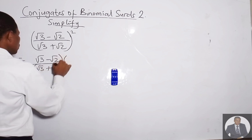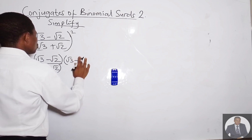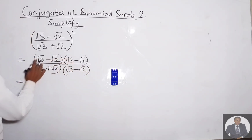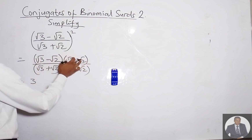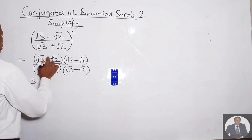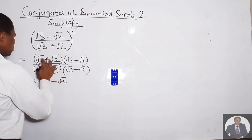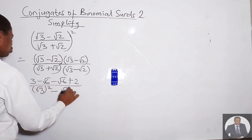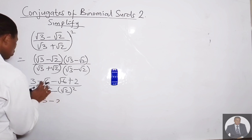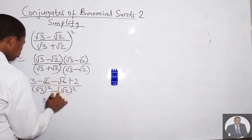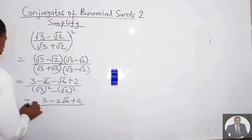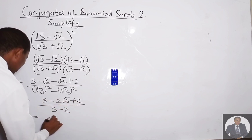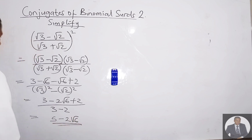We multiply numerator and denominator by (√3 + √2). Expanding: √3 times √3 = 3, √3 times (−√2) = −√6, (−√2) times √3 = −√6, and (−√2) times (−√2) = +2. The denominator gives (√3)² − (√2)² = 3 − 2 = 1. So the inner expression simplifies to (3 + 2) − 2√6 = 5 − 2√6.